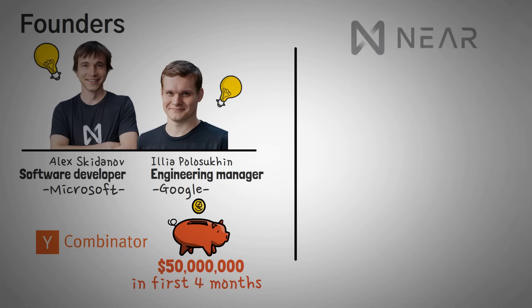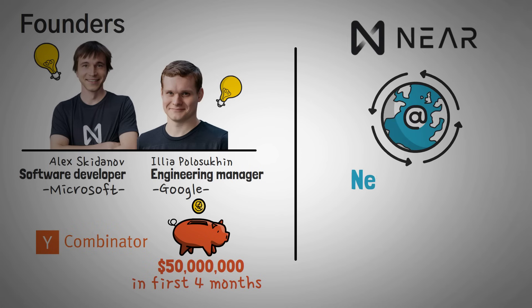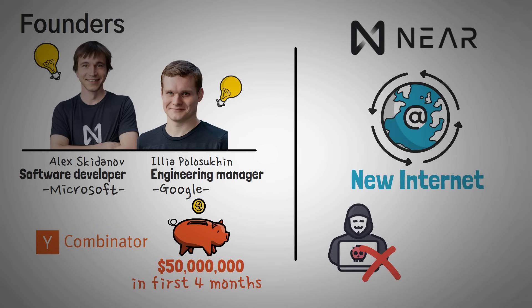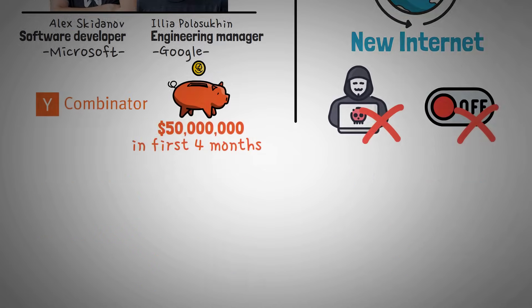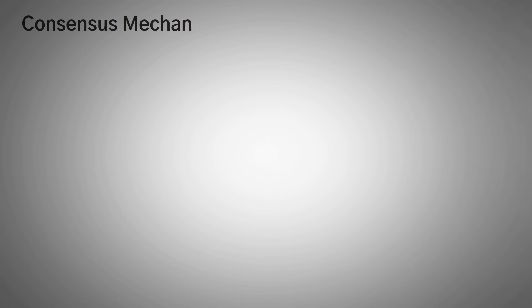According to NEAR's website, the NEAR Collective — which is what they call themselves — is basically building the infrastructure for a new internet, which makes it harder for giant companies to steal your data and for bad-actor countries to shut it down. It's interesting that they're trying to replace the entire internet, but let's take a look at what that means on the technical side of the network.